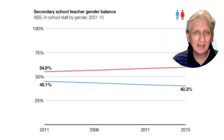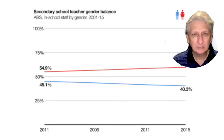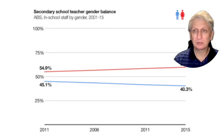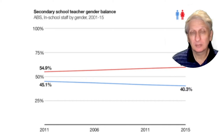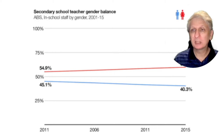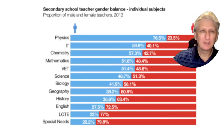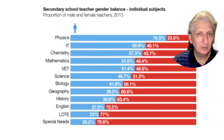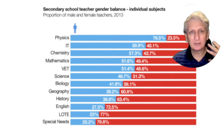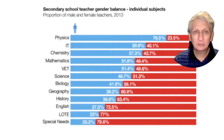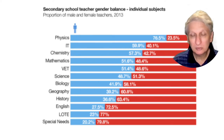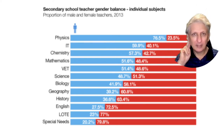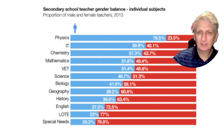In terms of gender balance in teaching, we're seeing an increased number of women and a decreasing number of males. Despite efforts to address that, it's an ongoing trend. This also needs to be unpacked by individual subject — in physics there are far more men than women, whereas in special needs and English the balance is skewed very much towards females. You can't just take an overall trend and make predictions; you need to delve into it in more detail. This is all part of futures thinking — students need to contextualise problems within a greater understanding of trends.